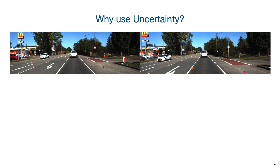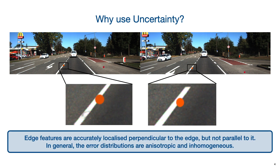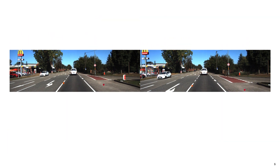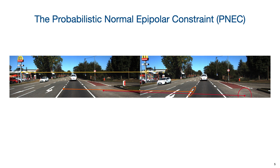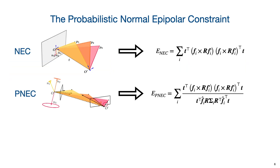The PNEC extends the normal epipolar constraint by accounting for the error distribution of feature positions. Given multiple feature correspondences, they will not exhibit the same error distributions. For example, an edge-like feature is well localized perpendicular to the edge but not parallel to it, also known as the aperture problem. The PNEC accounts for the different error distributions by associating an anisotropic covariance matrix to each feature correspondence in the image plane, which is then used to derive the variance of each error residual and weight the respective feature correspondence in the optimization.